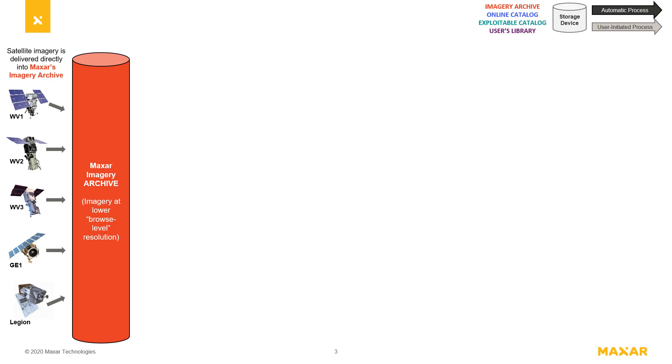It's important to note that when browsing images in the archive, they're going to appear blurrier or fuzzier than expected. That's because archive imagery is stored at a lower browse level resolution, only meant to provide a preview of images.